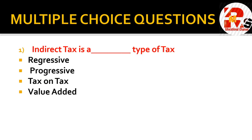The first question: indirect tax is a blank type of tax. The options are regressive, progressive, tax on tax, and value added. If you look at this question carefully, you need to identify which type of tax indirect tax falls under.